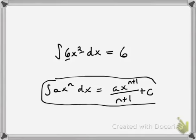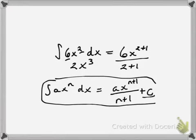So we write 6x to the 2 plus 1, all over 2 plus 1. And that's 6 over 3, which is 2x to the 3. And then there's always a c tacked on as well. But sort of just a triviality.